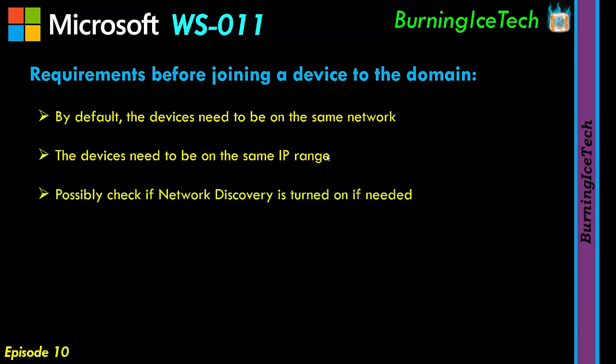If you've verified the devices are on the same network and the IP address is correct but you still don't have connectivity, check a few things. First, check that network discovery is turned on, especially for a client computer. Go into your network settings and verify it's enabled — if it's not turned on, that PC is basically invisible on the network, similar to browsing in a private/encrypted mode where your information isn't visible.